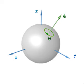Rotations in three-dimensional space differ from those in two dimensions in a number of important ways. Rotations in three dimensions are generally not commutative, so the order in which rotations are applied is important even about the same point. Also, unlike the two-dimensional case, a three-dimensional direct motion in general position is not a rotation but a screw operation. Rotations about the origin have three degrees of freedom — the same as the number of dimensions.